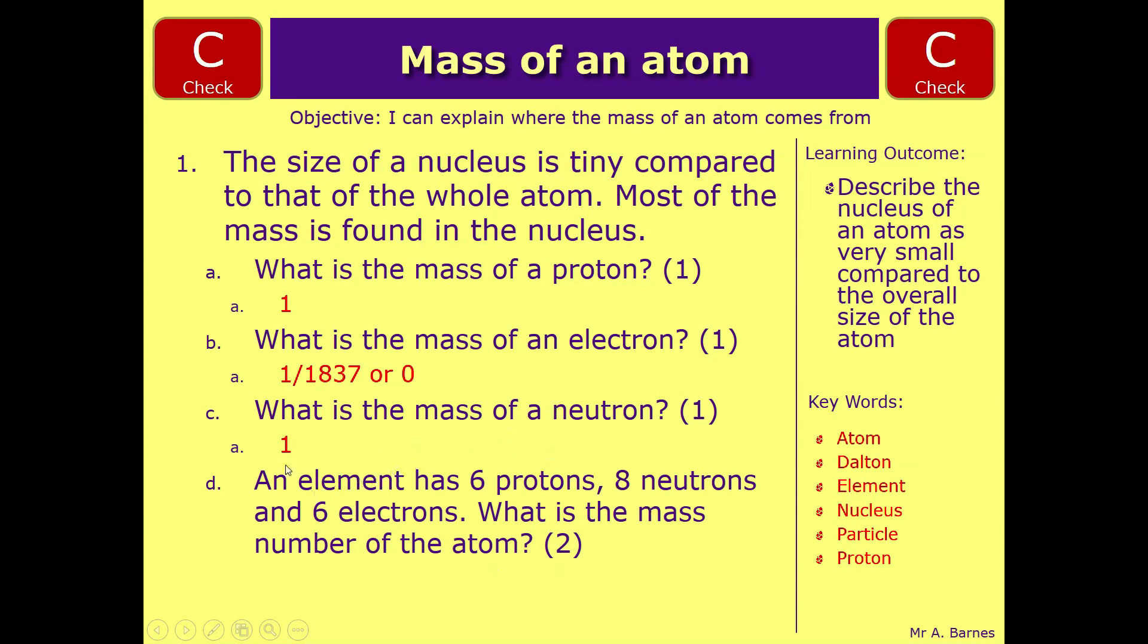And then here, for D, they've actually thrown in a little bit to try and confuse you. They've said you've got 6 electrons. Because we're saying the mass is effectively 0, you don't include that. So what you do is you take the protons, which is 6 times 1, and neutrons 8 times 1, and add them together.